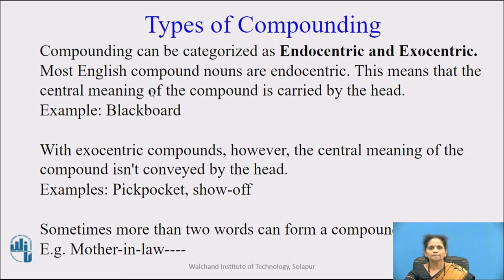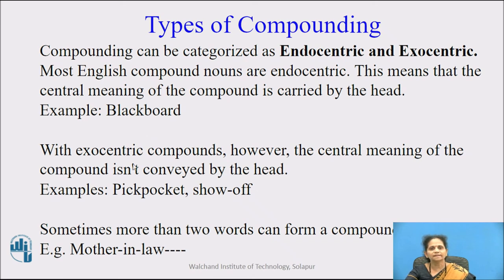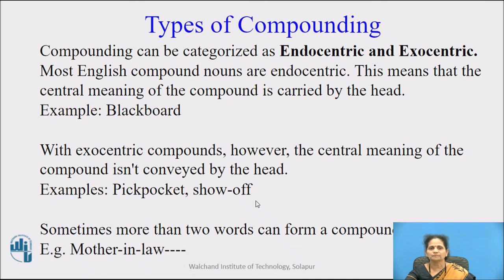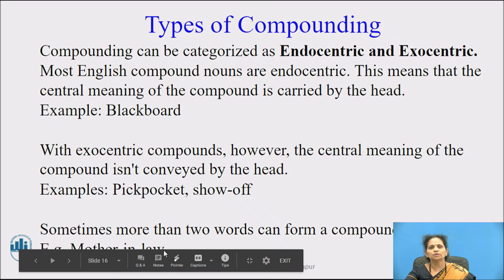Types of compounding: compounding can be categorized as endocentric and exocentric. Most English compound nouns are endocentric, meaning the central meaning of the compound is carried by the head — for example, 'blackboard.' With exocentric compounds, however, the central meaning of the compound is not conveyed by the head — examples are 'pickpocket' and 'show-off.' Sometimes more than two words can form a compound, and an example is 'mother-in-law.'